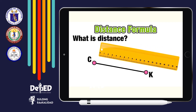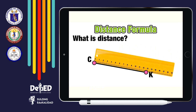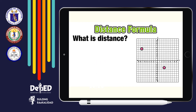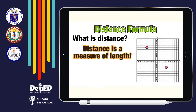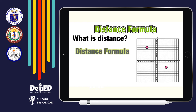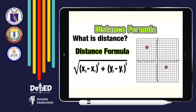If we measure this line with a ruler, we would say that CK has a length of 13 centimeters. And we are going to extend this idea of finding distance between points on the coordinate plane. Please note that the distance is a measure of length — the words are interchangeable — and distance is measured in units. When finding distances on the coordinate plane, our tool is not going to be a ruler, but the distance formula.